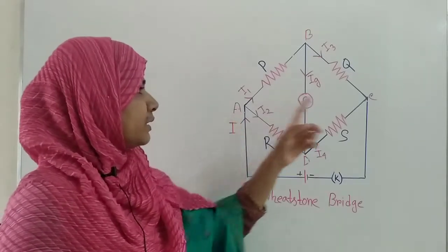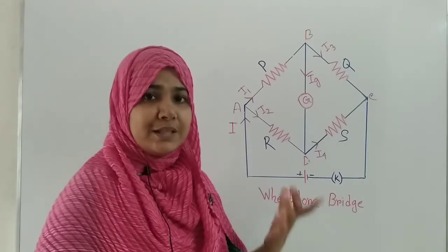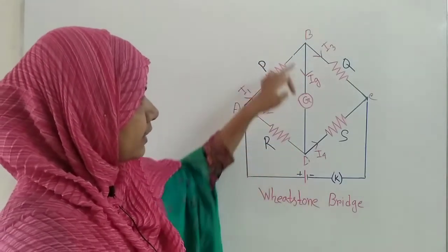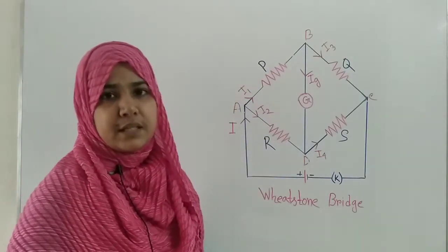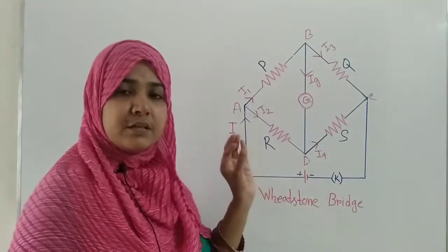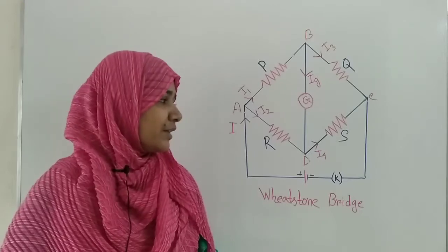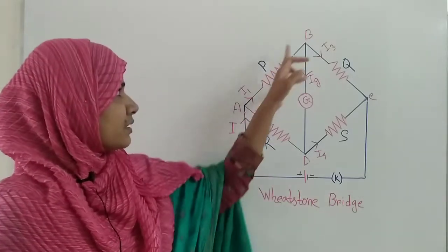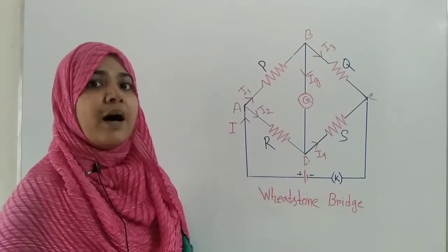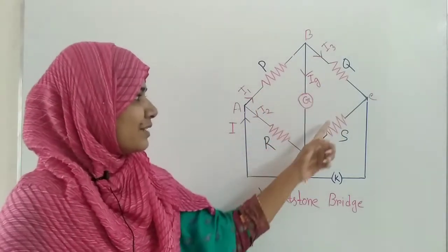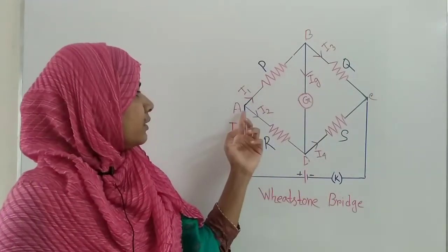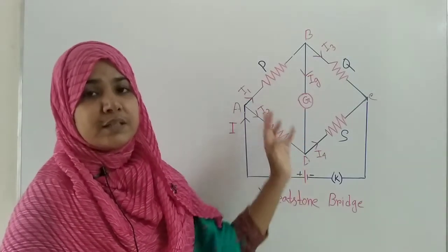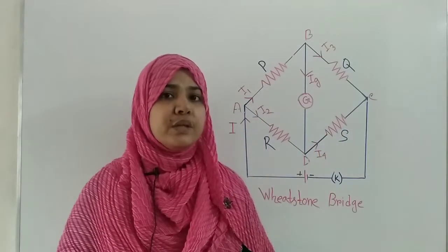In the opposite two junction points A and C — these two junction points are opposite — there is a cell connected. And in the other two opposite junction points B and D, there is a galvanometer connected. And that type of formation of circuit is known as the Wheatstone Bridge.